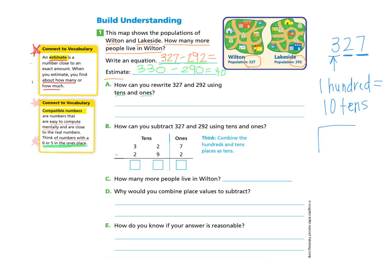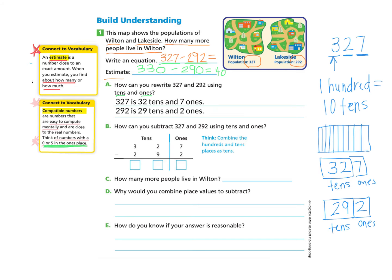What that means is if I have 100 here, I can cut the hundred into 10 groups of 10. This value is still the same, which means that 327 can really mean 32 tens and seven ones. And 292 can really be called 29 tens and two ones. So 327 is 32 tens and seven ones, and 292 is 29 tens and two ones.